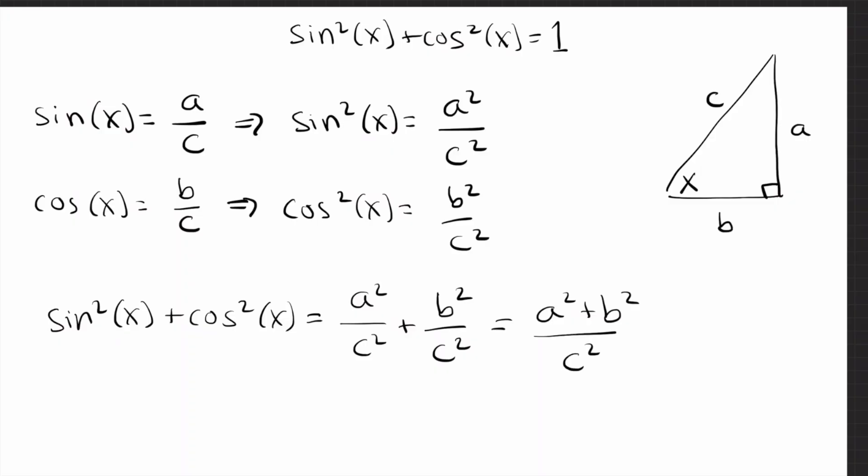And of course, the top comes from the Pythagorean Theorem. In the Pythagorean Theorem, we know that a squared plus b squared is c squared. So I get c squared over c squared, which of course is 1. And there we go. We just proved that sine squared plus cosine squared is 1.